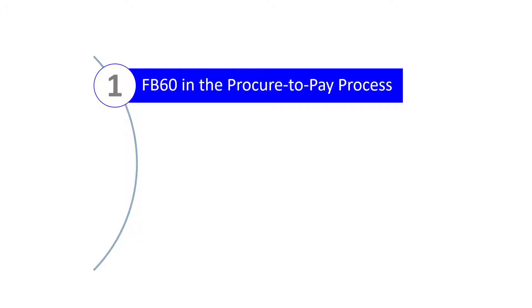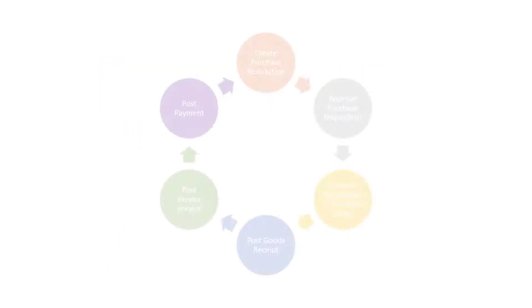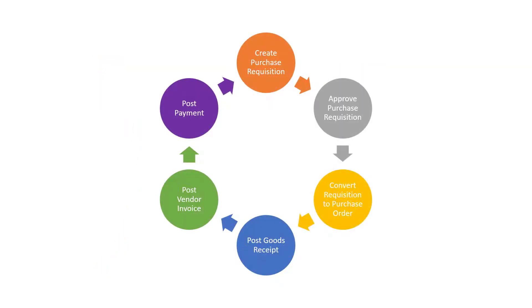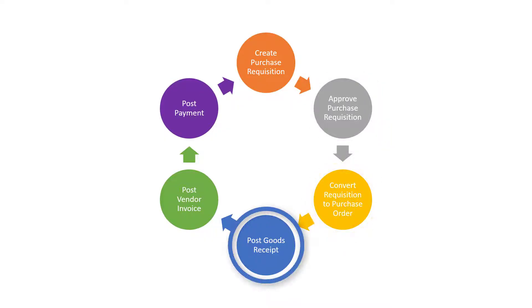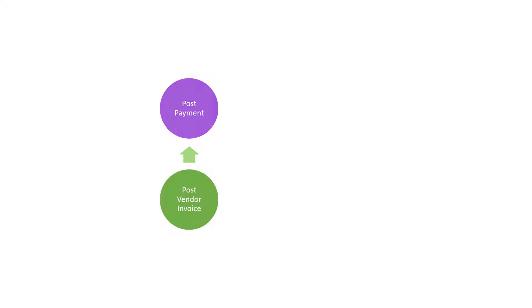Let's begin with where Transaction FB60 fits in the Procure2Pay process. It's worth noting that a non-PO invoice does not reference a purchase order, so the procurement steps — Create Purchase Requisition, Approve Purchase Requisition, Convert Requisition to Purchase Order, and Post Goods Receipt — are not relevant. Transaction FB60 sits within the Post Vendor Invoice step and is completed by the Accounts Payable department.